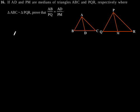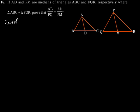Exercise 6.3, question number 16. If AD and PM are medians of triangle ABC and PQR respectively, where triangle ABC is similar to triangle PQR, prove that AB by PQ is equal to AD by PM. Now let us consider this figure which is according to the information given in the question. It is given that triangle ABC is similar to triangle PQR.